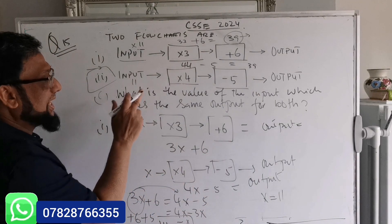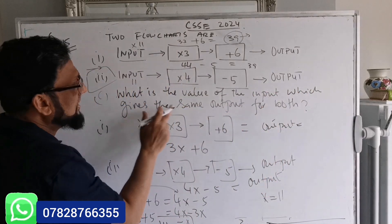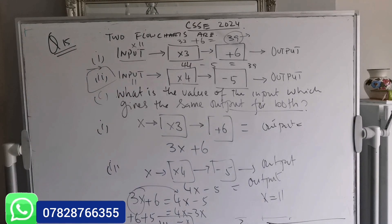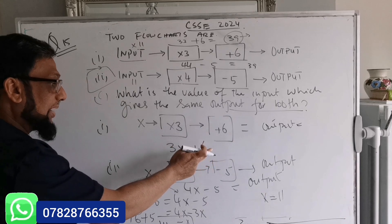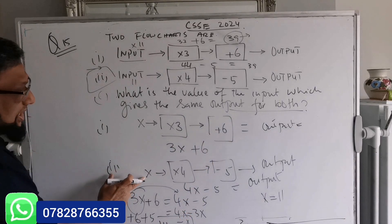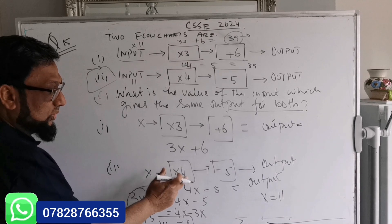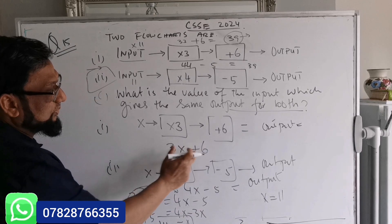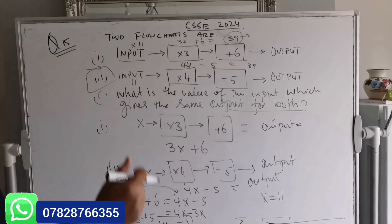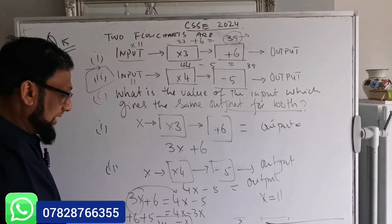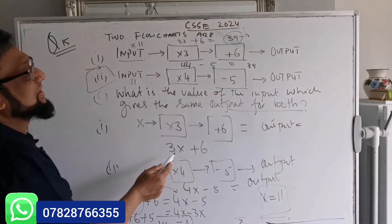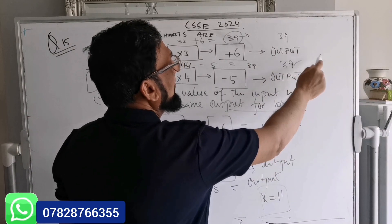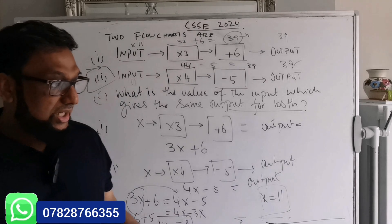Going back to the question: what is the value of the input which gives the same output for both flowcharts? We assumed x, formed the equation 3x + 6 = 4x - 5, solved to get x = 11. Putting 11 into both flowcharts gives the same output of 39. Verified!